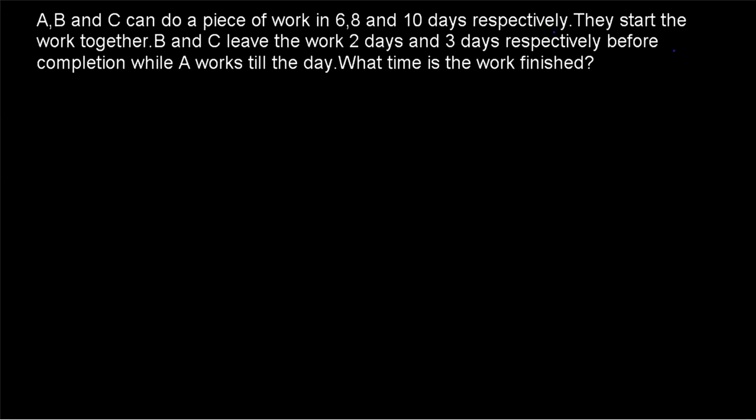Hi friends, welcome to today's class. Today's question is: A, B and C can do a piece of work in 6, 8 and 10 days respectively. They start the work together. B and C leave the work 2 days and 3 days respectively before completion, while A works till the last day. What time is the work finished?